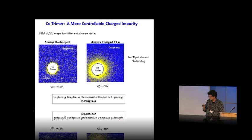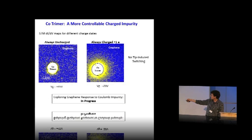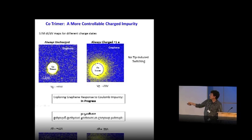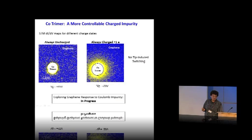We now have a chance of testing some of these ideas. You can see an uncharged cobalt trimer and a charged cobalt trimer — this yellow halo is the electrons in graphene rearranging themselves around that charged trimer due to the Coulomb impurity. The physics that we want to get at is living in that halo. That's what we're in the process of analyzing now.